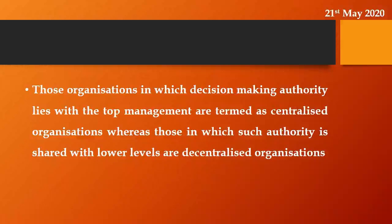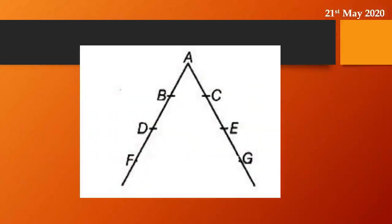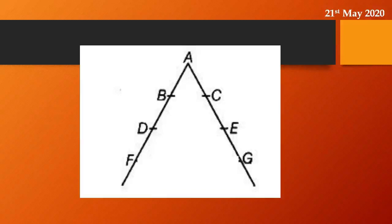Let us understand this with an example. Here you can see A is the boss of B, C, D, E, F, and G. A is the top level management. Now, if A is taking all decisions and passing them on to the other people like B, C, D, E, F, and G, that means this organization is centralized because all decisions are taken only at the top level.